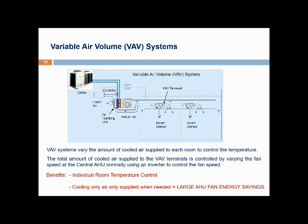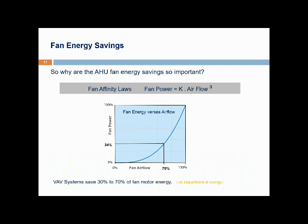VAV systems vary the amount of cool air supplied to each room to control the temperature, and the total amount of cooled air supplied to the VAV terminals is controlled by varying the fan speed of the central air handling unit, normally using an inverter. This provides individual room temperature control and reduces the amount of air circulated around the building when not needed, resulting in large AHU fan energy savings. The fan power is proportional to the cube of the airflow — so even a small reduction down to 70% airflow results in a large reduction in fan power down to 34%.